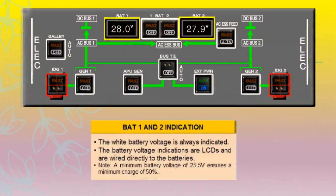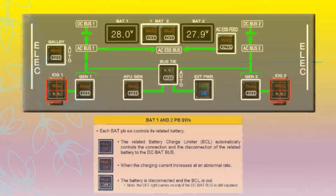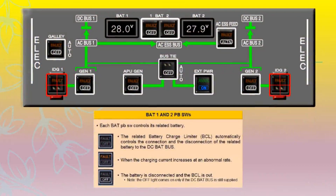The white battery voltage is always indicated. Battery voltage indications are LCDs and are wired directly to the batteries. A minimum battery voltage of 25.5V ensures a minimum charge of 50 percent. If there are no lights illuminated on the pushbutton, it means the related battery charger automatically controls the connection and disconnection of the related battery to the DC BAT bus.